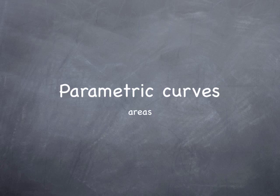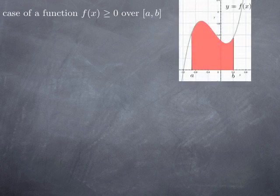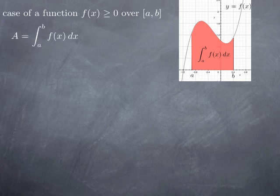Continuing our introductory study of parametric curves, let's take a look at areas. The case we've extensively studied before is a continuous non-negative function over a closed interval, where we look at the area under the graph of the function over that closed interval. To calculate the area, we simply calculate the definite integral of the function over the interval [a, b], giving us the red area denoted by capital A. Since we are looking at the curve y = f(x), we can formally write this integral as the integral from a to b of y dx.